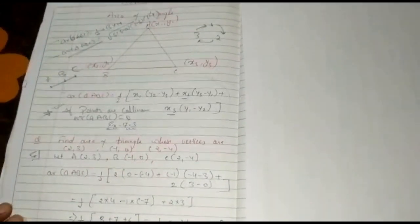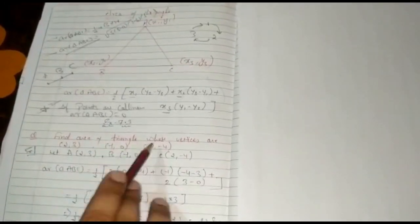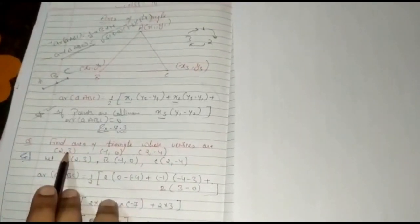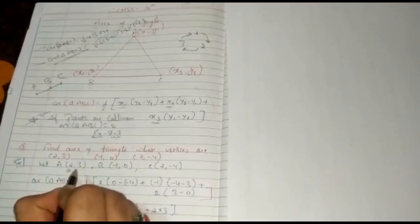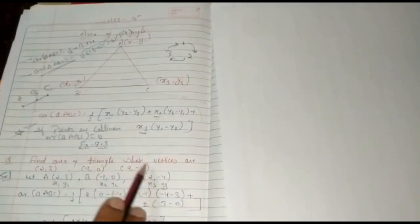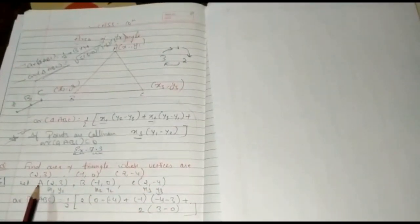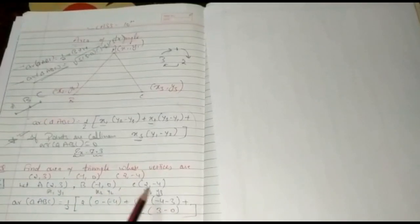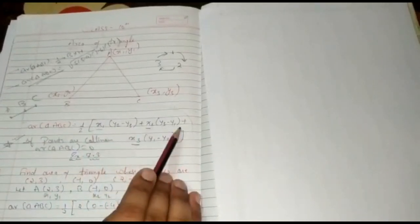Let us discuss the first question of exercise 7.3: find the area of the triangle whose vertices are given. We have three points A, B, C. The coordinates of A are (2, 3) — let this be x1, y1. The coordinates of B are (−1, 0) — this is x2, y2. And the coordinates of C are (2, −4) — this is x3, y3, as discussed in the formula. It is not necessary to take the points in any particular order unless specifically stated in the question.